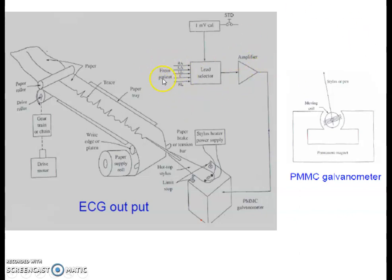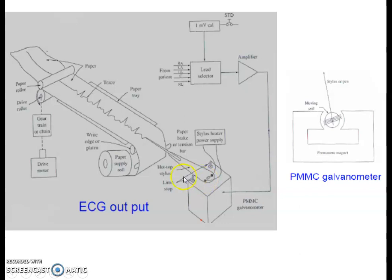The signals which arrive from the patient go to the lead selector. This output goes to the amplifier and ultimately the conditioned signal goes to the PMMC galvanometer. This PMMC galvanometer has a structure containing a permanent magnet, and in the vicinity of this permanent magnet there is a moving coil assembly. This assembly is attached with one of the stylus or pointer. In this electrocardiograph machine, this pointer is generally replaced by the hot loop stylus which moves in the vertical direction over the paper, which is designed to rotate in the horizontal direction as per the speed set by the drive motor in the gear assembly.